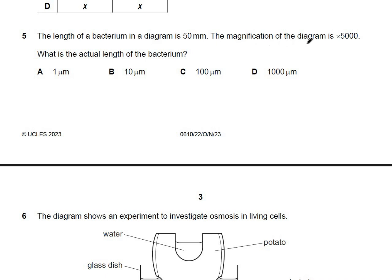Question 5: the length of a bacterium in a diagram is 15 mm and the magnification is 5000. What is the actual length? The units in the answers are micrometers, so convert: 50 mm × 1000 = 50,000 micrometers. Using the formula magnification = image length / actual length, the actual length works out to 10 micrometers.